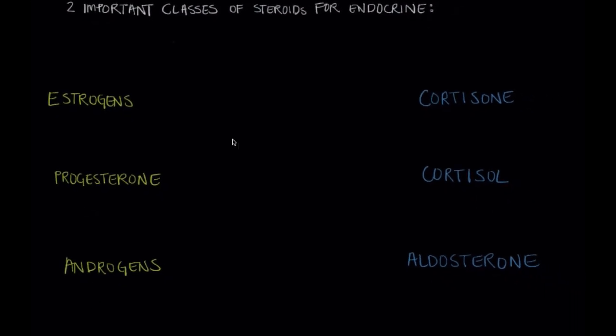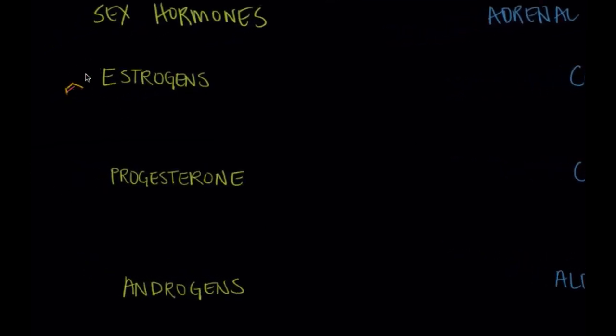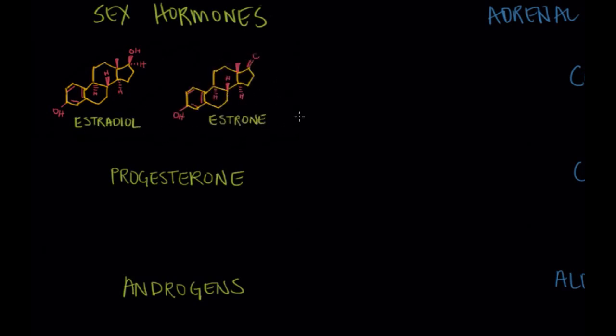And so I mentioned before that there are two important classes of steroid hormones in the body and those are the sex hormones and the adrenal cortex steroids. And so with the sex hormones I mentioned before estrogens. And we have estradiol and estrone and you can see their steroid backbone and those are predominantly made in the ovaries and they're principally involved in secondary sex characteristics for females.